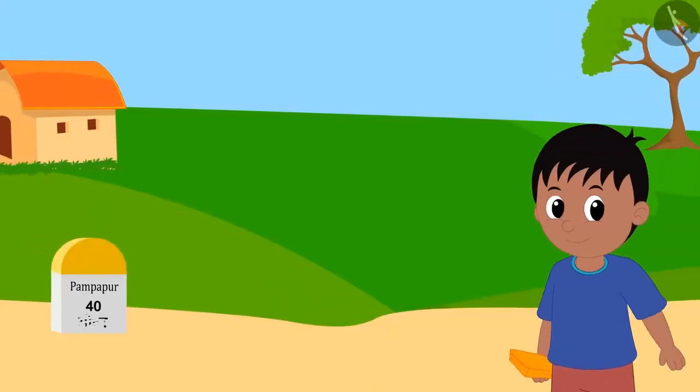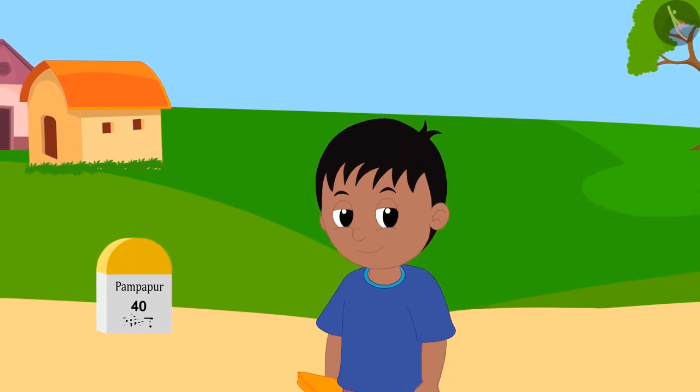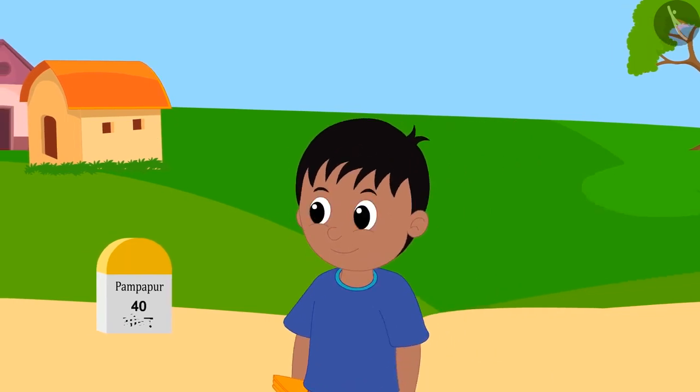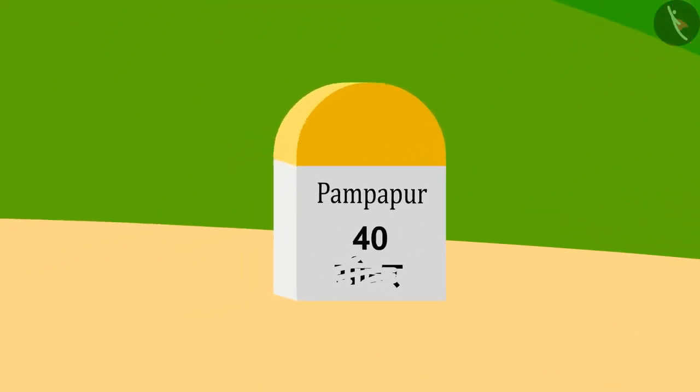Now Raju was about to reach his house. Just then, on the way he saw it was written on a stone plate on the ground: Pampapur 40, but the unit below was erased.